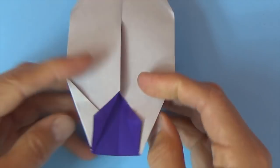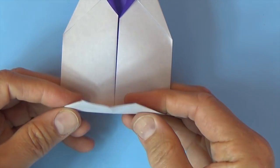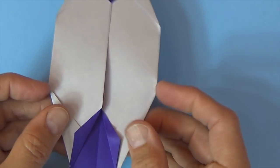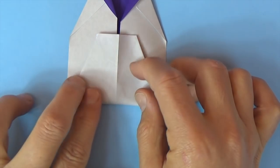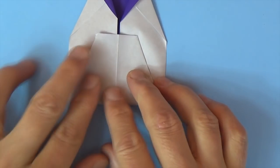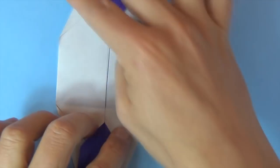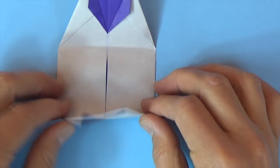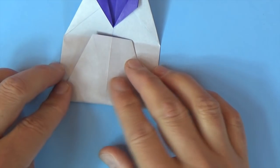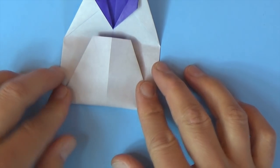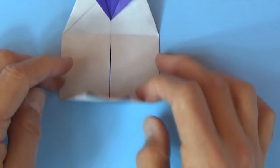Okay now let's fold this whole flap up right between these two points. And you don't need to crease sharply for this. And unfold and rotate and do the same thing on this side. Just a soft fold. Okay and unfold.